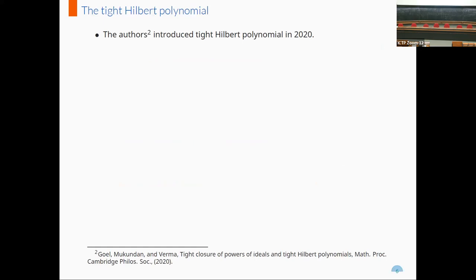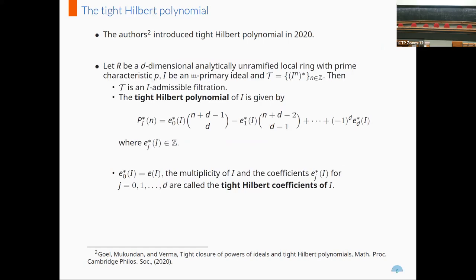Goel, Mukundan, and Verma recently introduced the notion of tight Hilbert polynomial. They proved the following: Let R be a D-dimensional analytically unramified local ring with prime characteristic P and I be an M-primary ideal. Let tau be the tight closure filtration — that is, we consider the tight closure of powers of I. Then tau is an I-admissible filtration, and therefore there exists a corresponding polynomial called the tight Hilbert polynomial. Here E-zero-star of I is the same as the multiplicity of I, and all other coefficients are called the tight Hilbert coefficients of I.